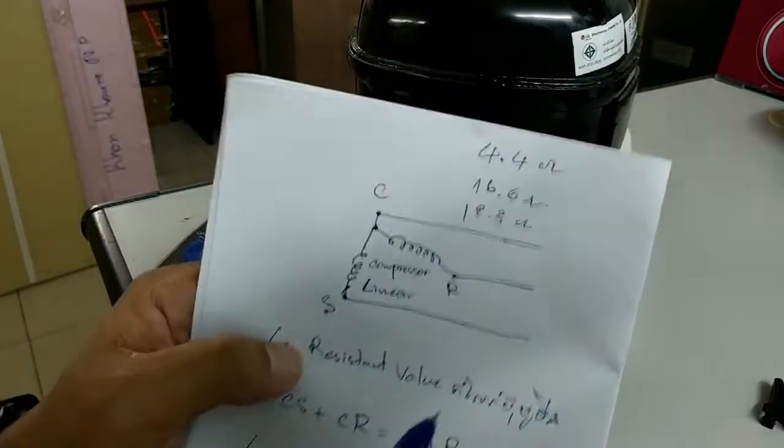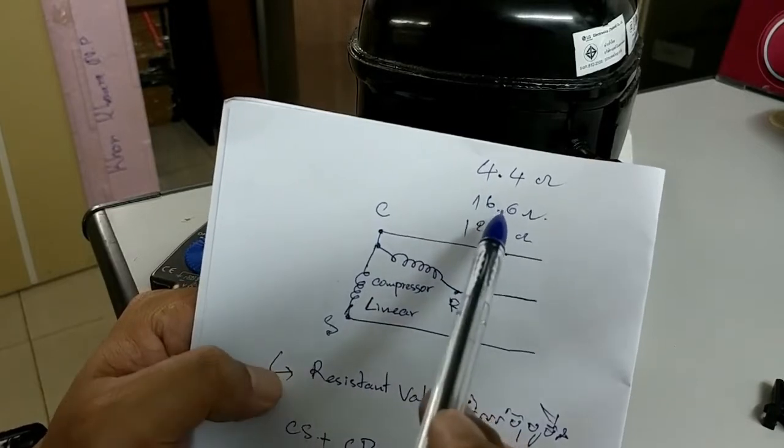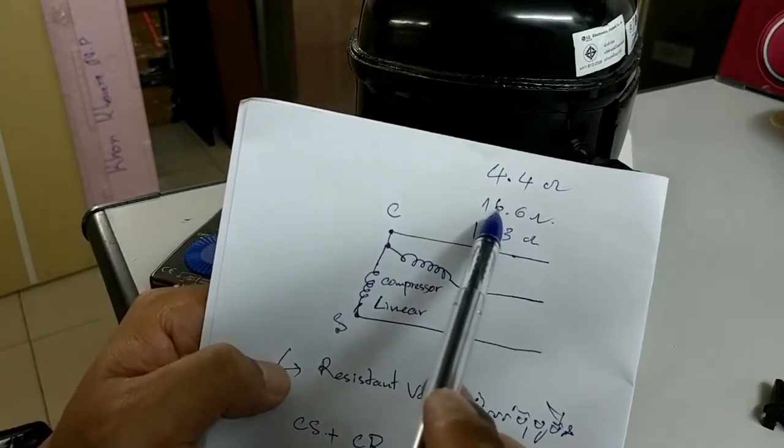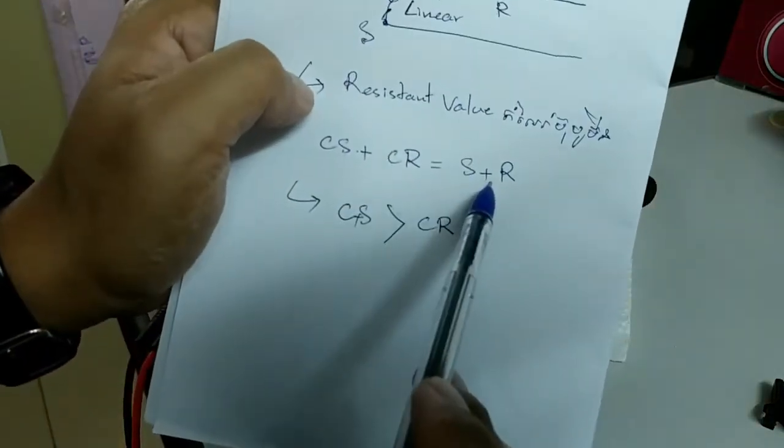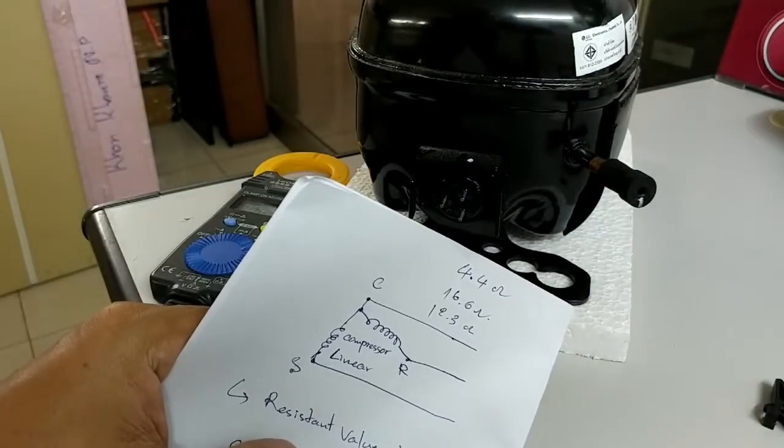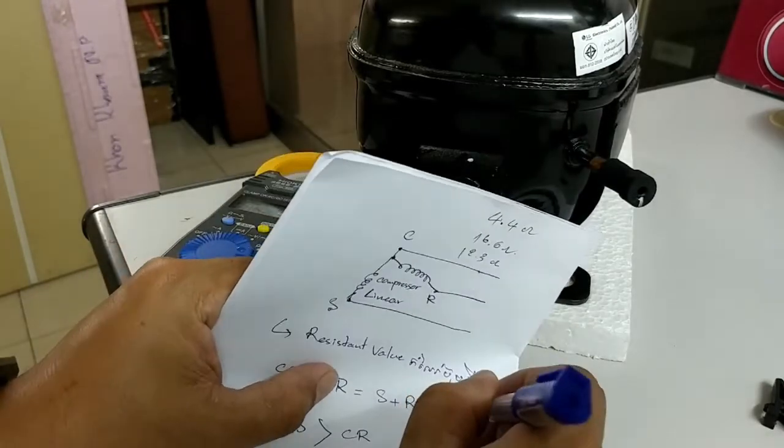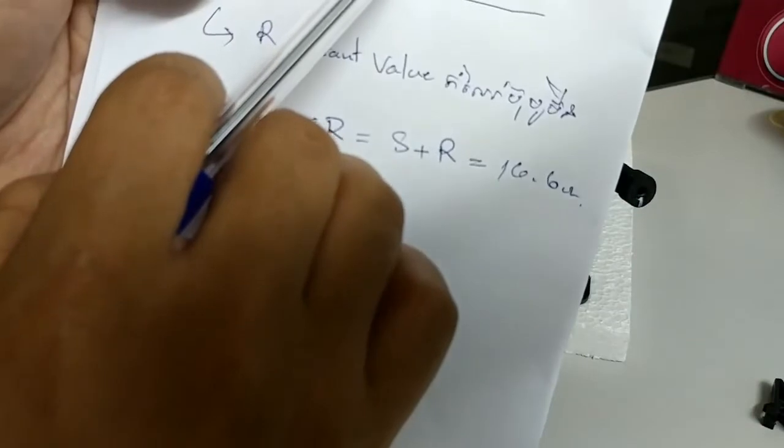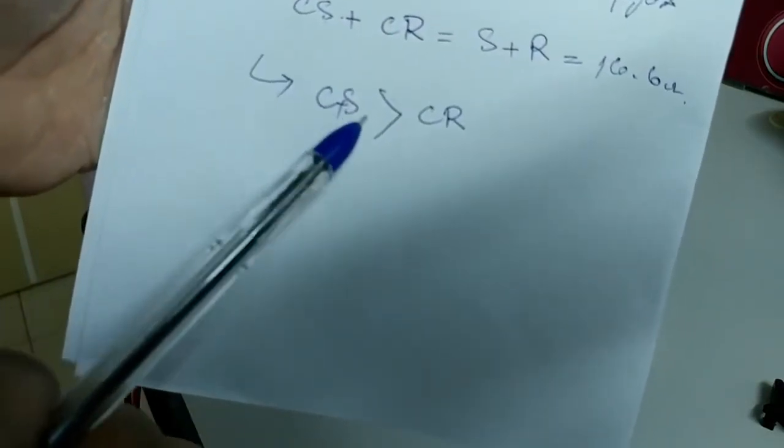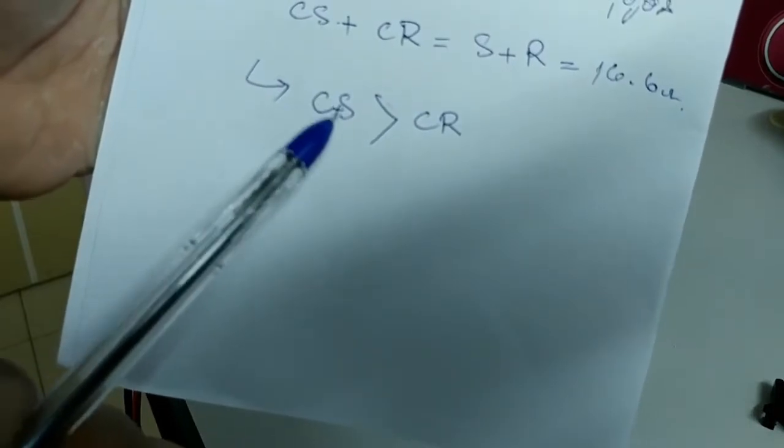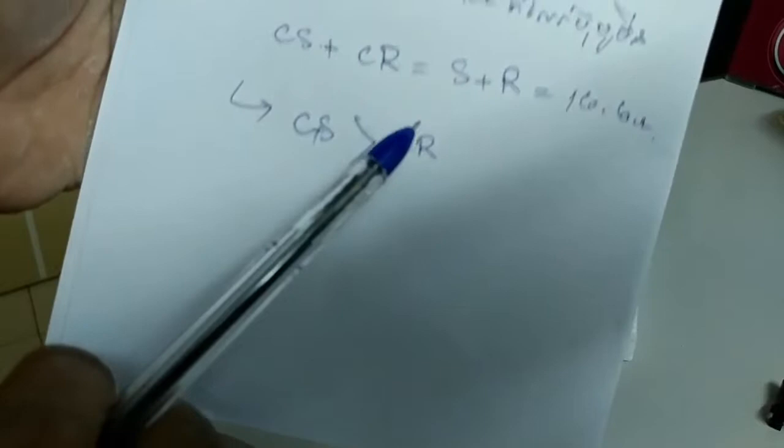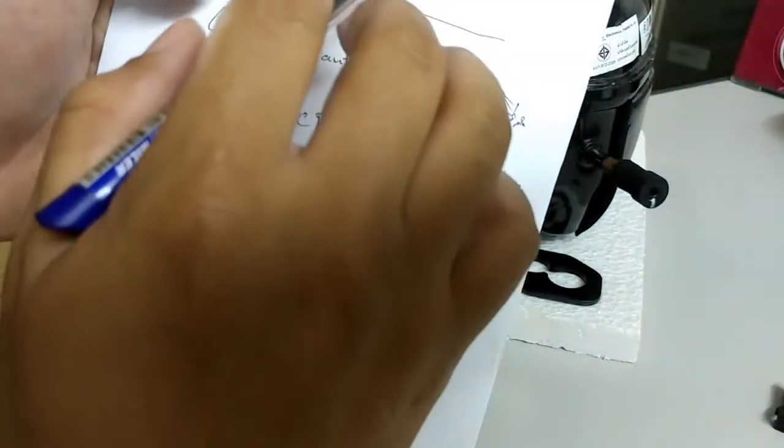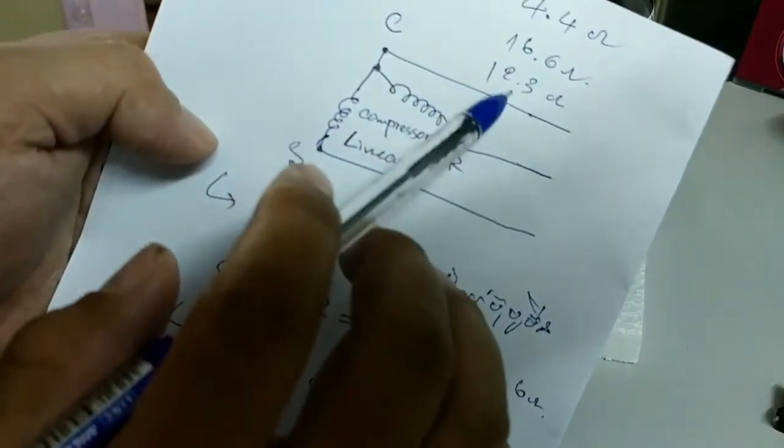So you will see the values, you can know which is the biggest. This one, so this one is S plus L, same 16.6 ohm. The other values are 12.3 and 4.4 ohm. So we know the bigger, CS, C plus S is bigger than C plus L. So the meaning, 12.3 is bigger than this one, so 12.3 is C plus S.